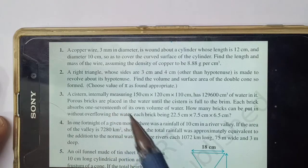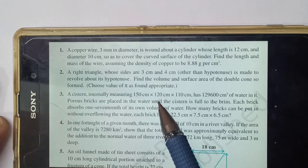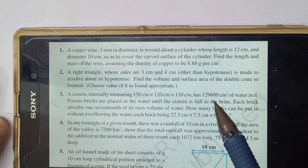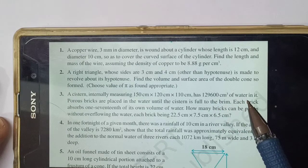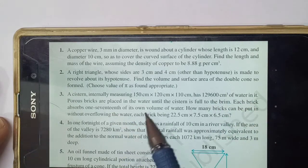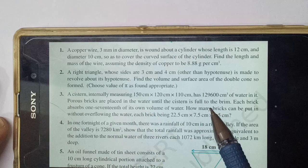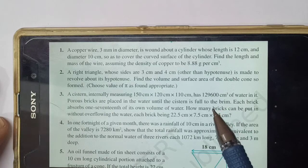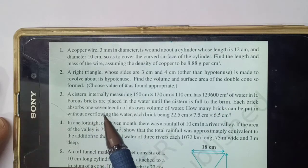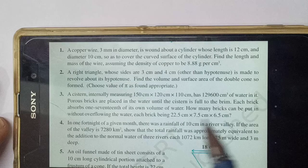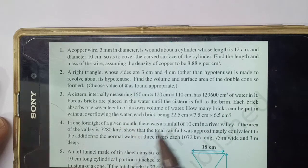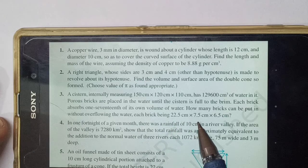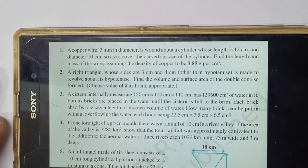A cistern initially measuring 150 cm, 120 cm and 110 cm has 129600 cm³ of water in it. Porous bricks are placed in the water until the cistern is full to the brim. Each brick absorbs 1/17th of its own volume of water. How many bricks can be put in without overflowing the water? Each brick being 22.5 cm, 7.5 cm and 6.5 cm.